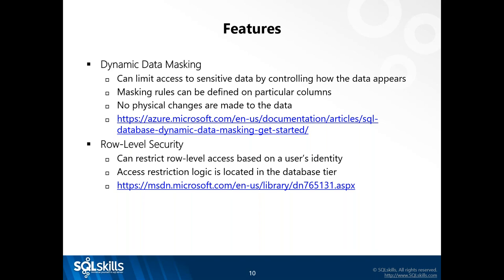Row level security allows you to filter data access based on a user's identity. For example, at a bank, tellers don't need to look at customer data where the customer is also an employee — that should be a branch manager. So for a million-row table with 800,000 external customers and 200,000 employees, a branch manager would see all 1 million rows, but a teller only allowed to see external customers would see 800,000 rows. It's very easy to configure and set up.